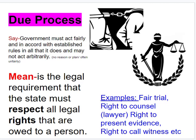Our next democratic ideal is a legal process known as due process. According to due process, the government must act fairly and in accord with established rules in all that it does, and may not act arbitrarily — meaning with no reason or plan, and often unfairly. So it goes back to: government must be fair, it must be just, and it must make sure that you're receiving your legal rights. The legal requirement means the state or country must respect all legal rights that are owed to a person.